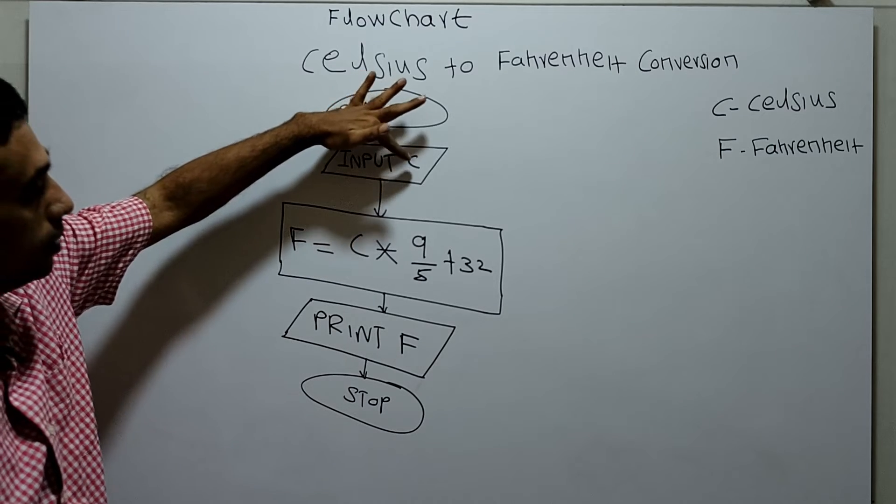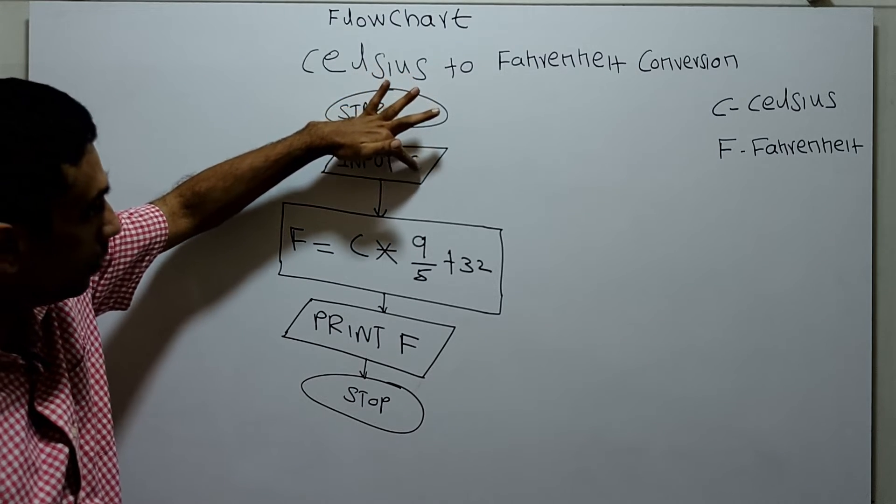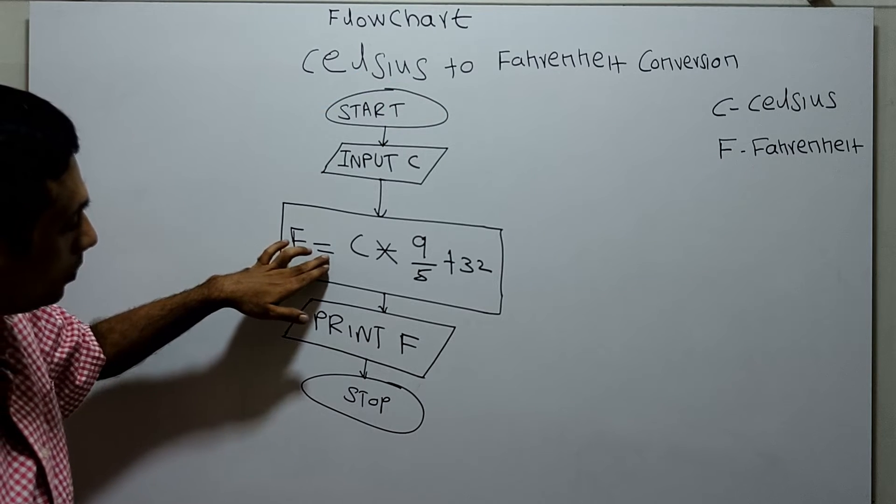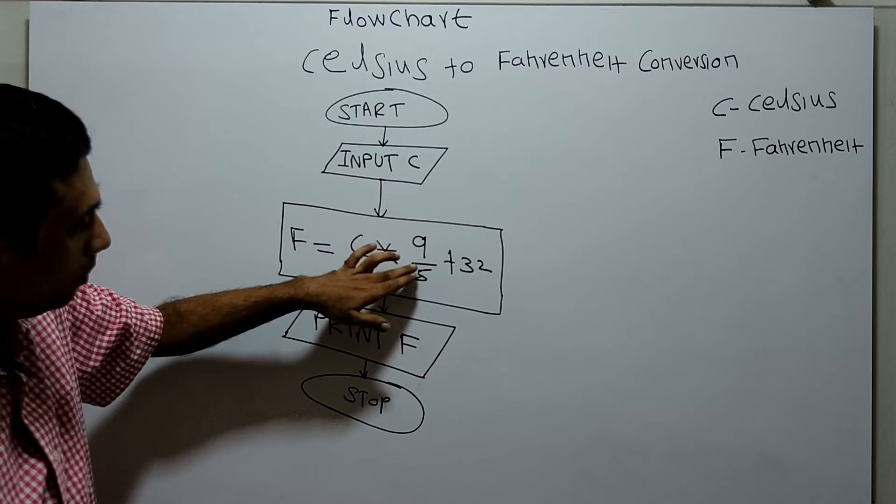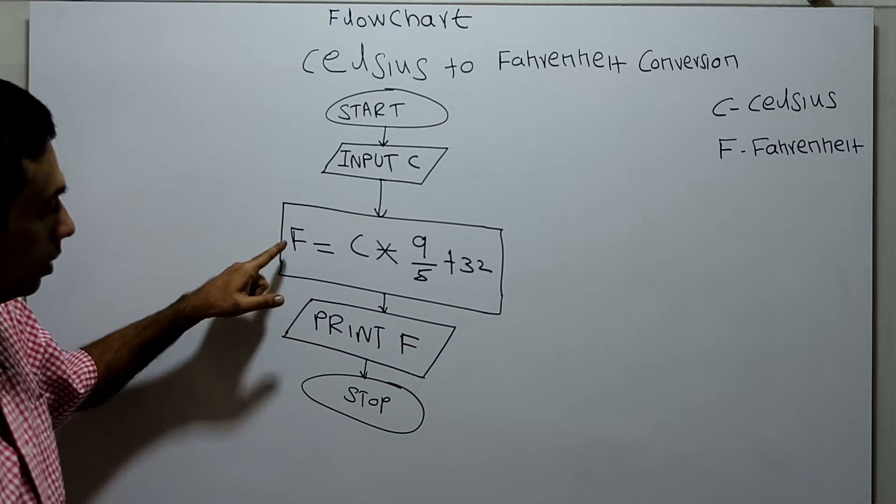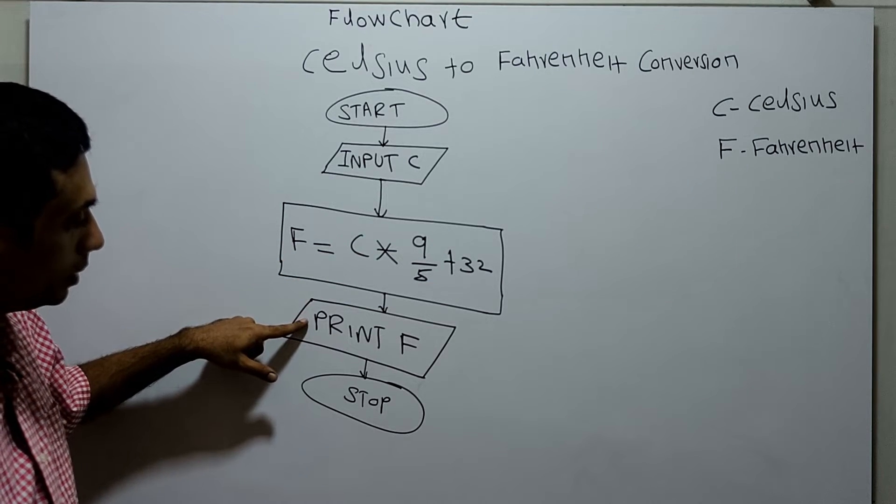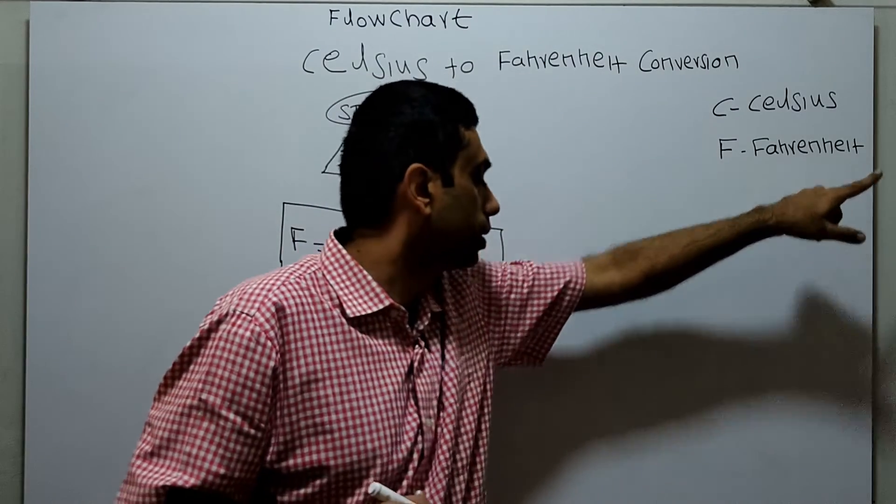So I am obtaining the Celsius value from the user. For this I am using a variable C. Fahrenheit F equals Celsius into 9 by 5 plus 32. Here the Fahrenheit is calculated. I am printing the Fahrenheit, print F. F is a variable for Fahrenheit.